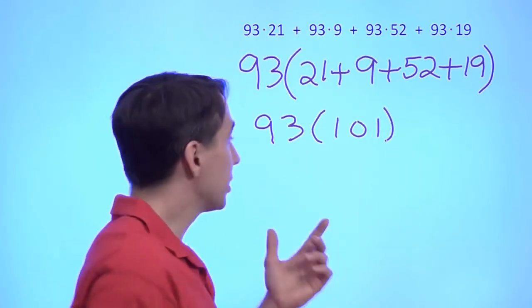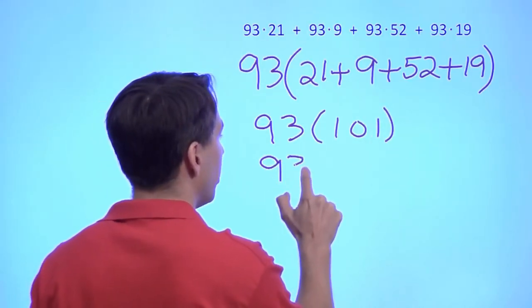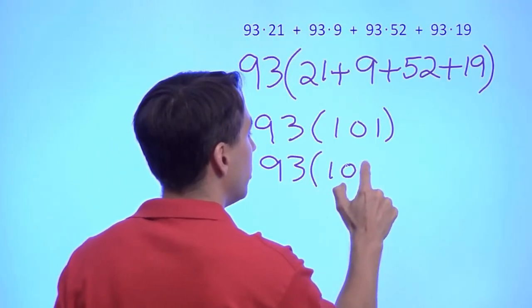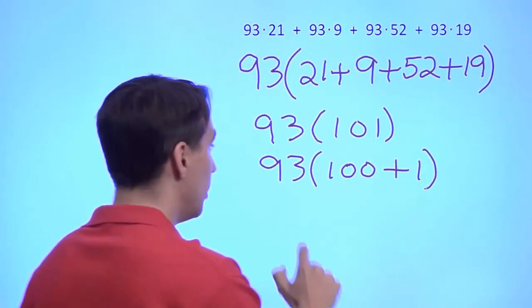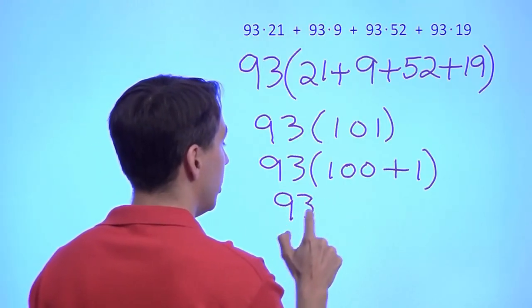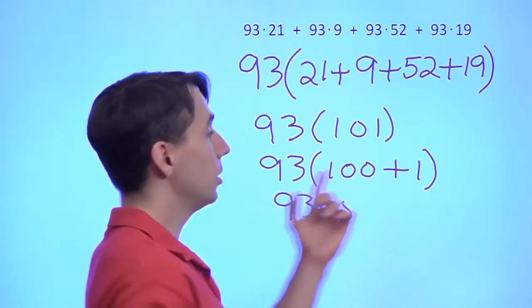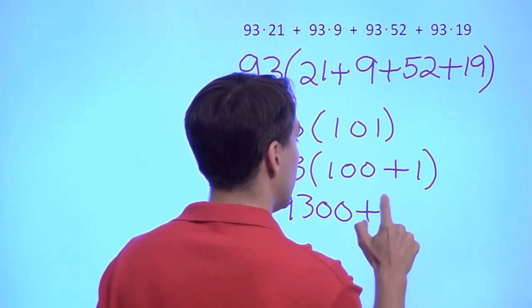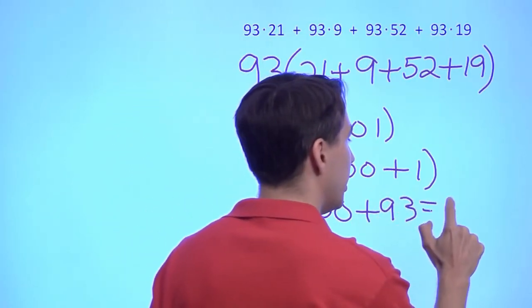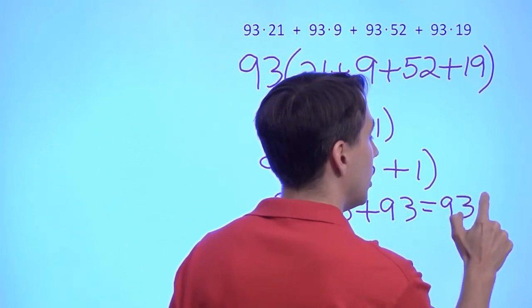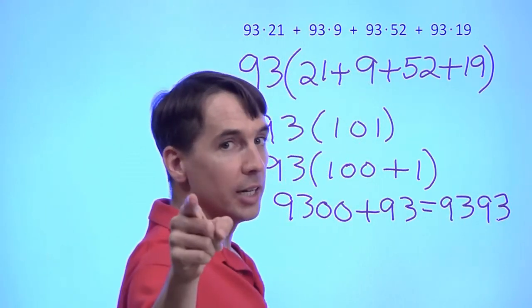And this way you can see what the product is, but we can also just use the distributive property again. 93 times (100 + 1). 93 times 100, that's 9,300. 93 times 1 gives us 93. So 9,300 plus 93, well, we know what that is. That's 9,393. And we're done.